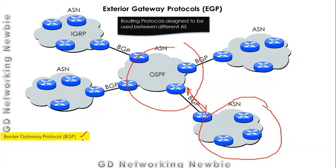In general, we consider that there is only a single exterior gateway protocol, and that is BGP — Border Gateway Protocol. This was a simple overview of the difference between interior and exterior gateway protocols.